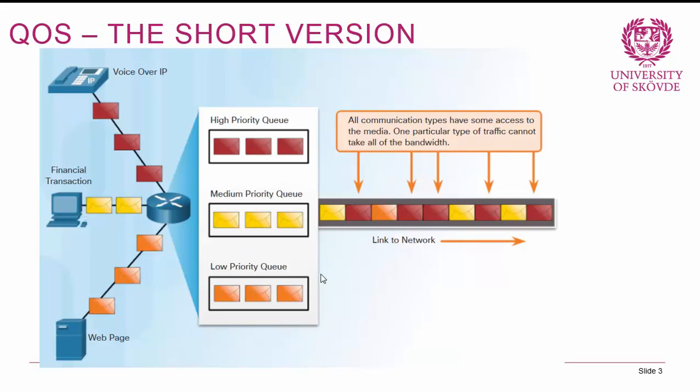The mindset we need before this lecture: as networks have developed and become more converged, there are more and more different types of traffic on our networks. We have traditional data traffic — web visits, email, financial transactions — but we also have voice over IP, video, and other sensitive real-time systems. We need our networks to be able to prioritize this traffic.